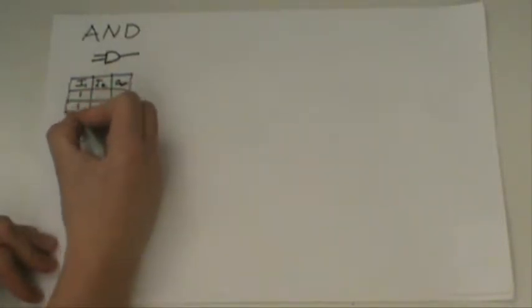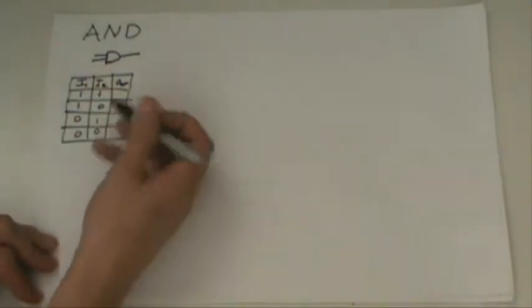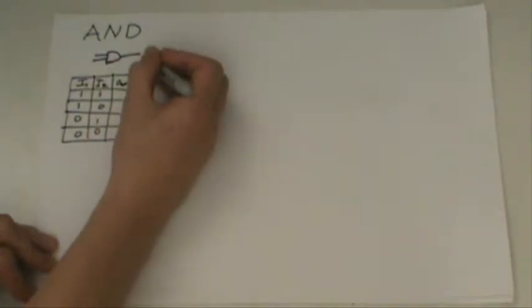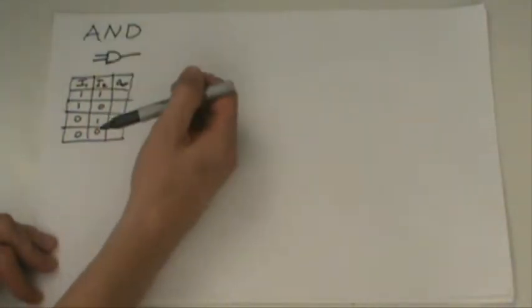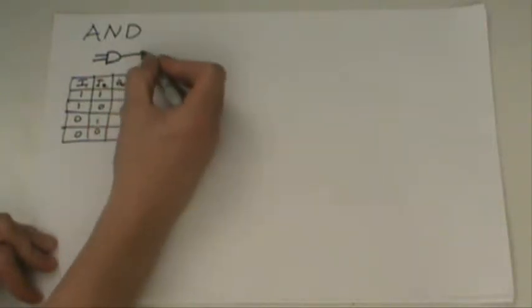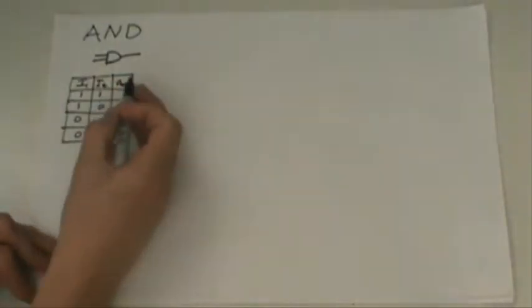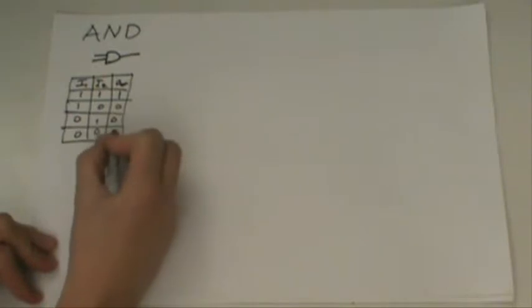So there's four different possibilities. They could both be on. This one could be on, this one could be off, or that one off, and that one on, or they could both be off. Now the AND condition means that, let's say we had two light switches to control a light. It means that both light switches, number one and number two, both have to be on to turn on the light. So if the light is on, it's a one, if the light is off, it's a zero. So if they are both on, then the light would be on. If only one is on, it's off, same thing here, off. And if they're both off, then it's off.